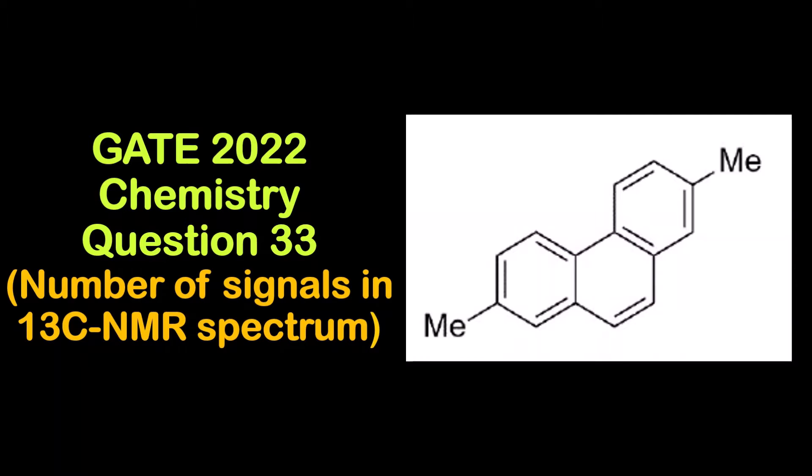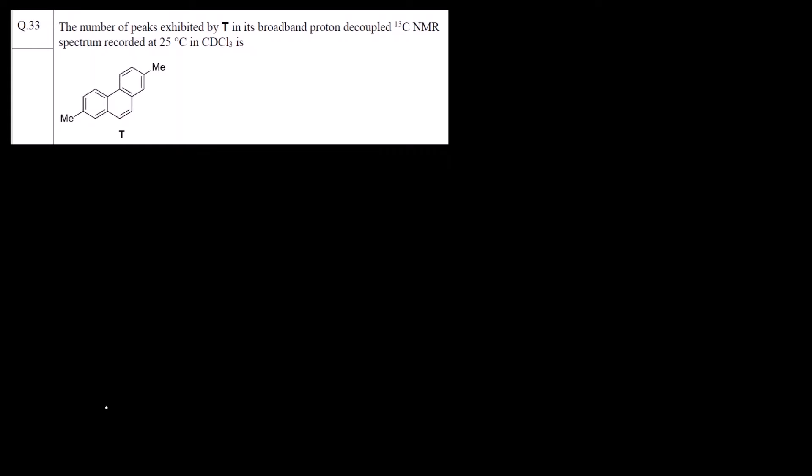This is again from the JEE 2022 chemistry paper and this is the compound. This is a question: the number of peaks exhibited by T. T is the name that is given to this compound in its broadband proton decoupled 13C NMR. It's very important to note for what we are finding out the signals, whether it is for 13C NMR or for 1H NMR. Because we normally have the habit to count 1H NMR signals. It's very important you have to count the carbon, the signals for 13C NMR recorded at 25 degree Celsius in CDCl3.